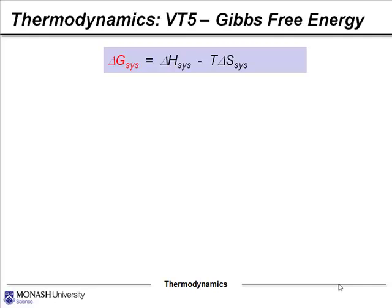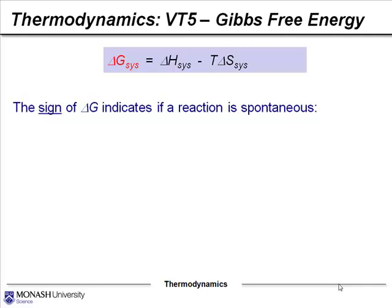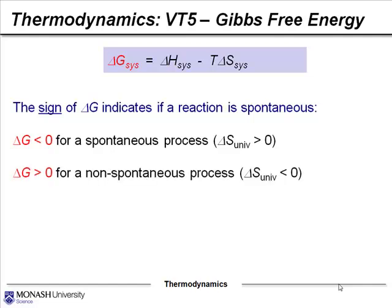Considering the Gibbs free energy of the overall system, the sign of the ΔG term indicates whether a reaction is spontaneous. If ΔG is less than zero, it's a spontaneous process — the overall change in entropy of the universe is greater than zero, so you're increasing disorder. If ΔG is greater than zero, it's a non-spontaneous process — the change in entropy of the universe is less than zero.